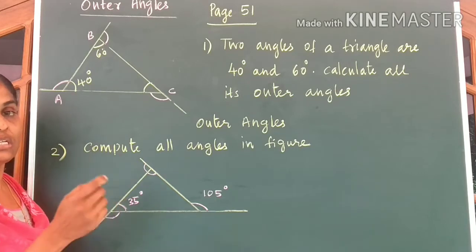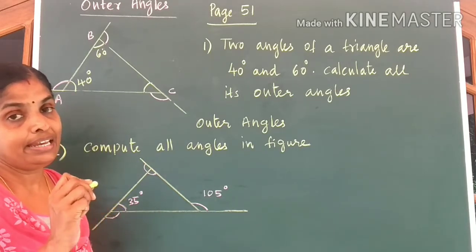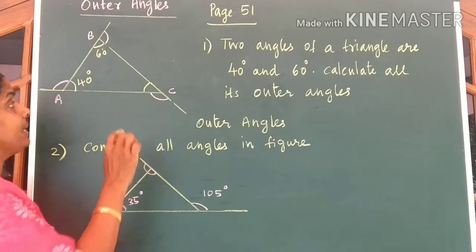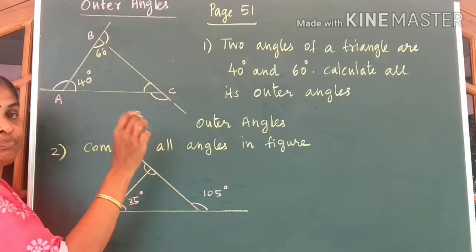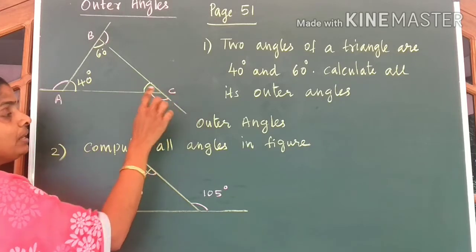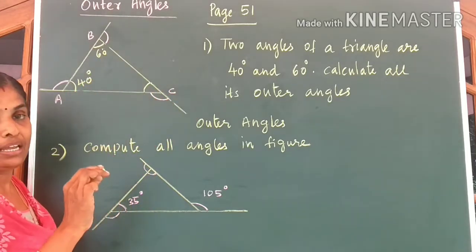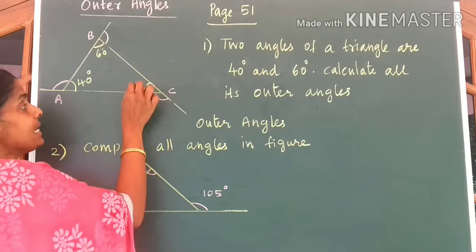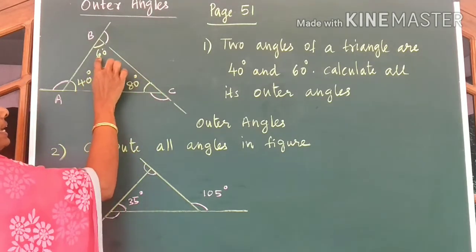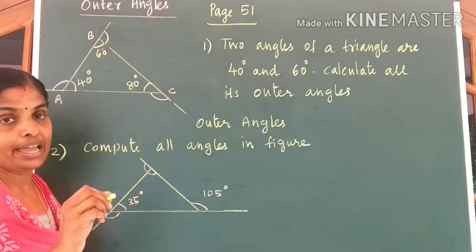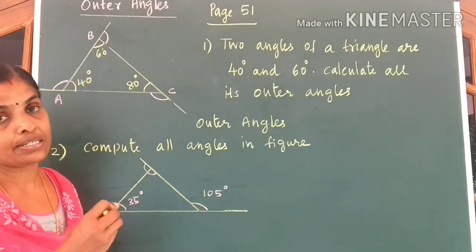Now, we know the sum of all angles in a triangle is equal to 180 degrees. So what can you say about the angle at C? Angle at C would be 180 minus (60 plus 40), which gives you 80 degrees. Now we know all the inner angles of the triangle, so it is easy for us to write the outer angles.